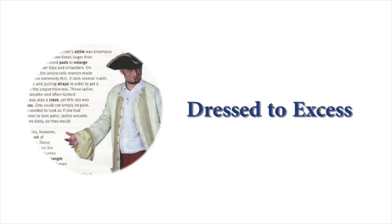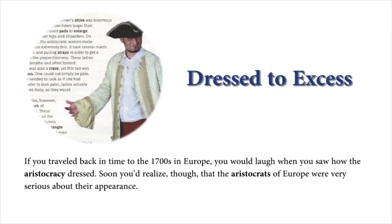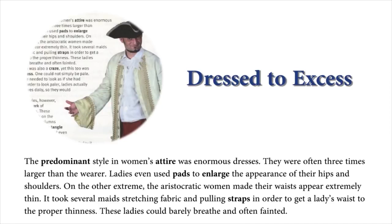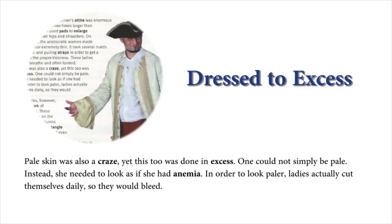Dressed to Excess. If you traveled back in time to the 1700s in Europe, you would laugh when you saw how the aristocracy dressed. Soon you'd realize, though, that the aristocrats of Europe were very serious about their appearance. The predominant style in women's attire was enormous dresses. They were often three times larger than the wearer. Ladies even used pads to enlarge the appearance of their hips and shoulders. On the other extreme, the aristocratic women made their waists appear extremely thin. It took several maids stretching fabric and pulling straps to get a lady's waist to the proper thinness. These ladies could barely breathe and often fainted.